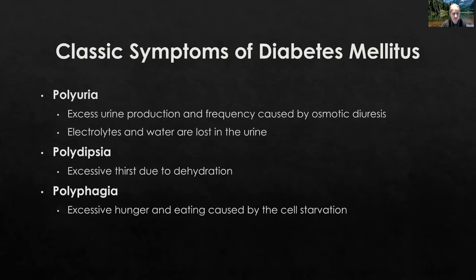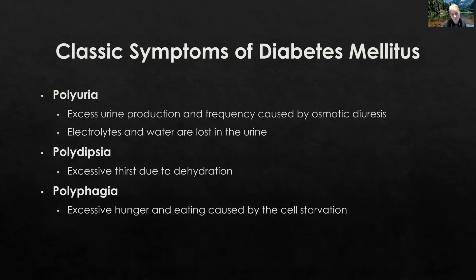Polyuria is excess urine production and frequency of urination caused by osmotic diuresis. Electrolytes and water are lost in the urine, leading to fluid volume deficit or dehydration. Polydipsia is excessive thirst, due to the dehydration the body is experiencing. Polyphagia is excessive hunger — even though the client is eating, they're still very hungry because the cells are starving. The cells need glucose but they can't get any. So the cells are starving, and even though the client is hungry and eating, they are losing weight.